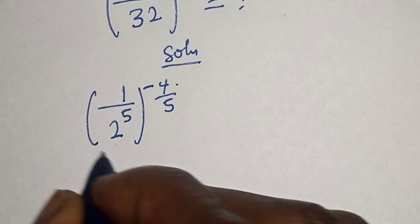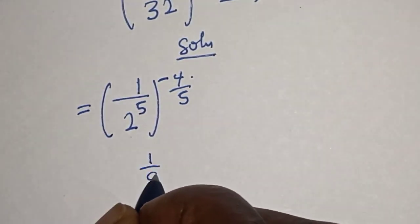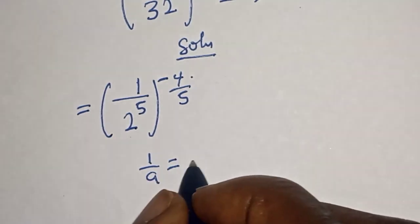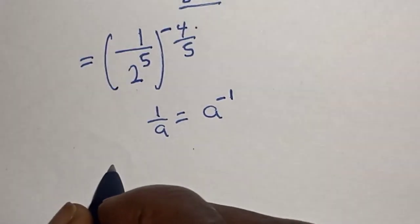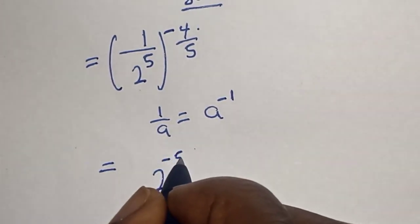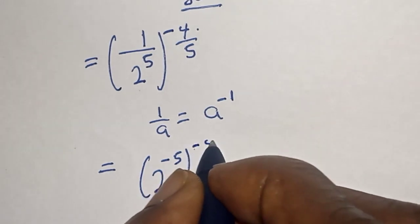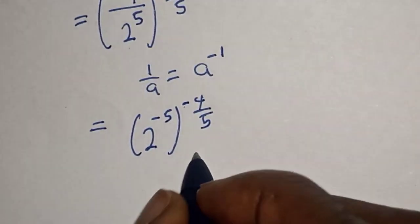Now, if you have 1 over a, this is equal to a raised to power minus 1. Then this is equal to 2 raised to power minus 5, raised to power minus 4 over 5. Take note of this: